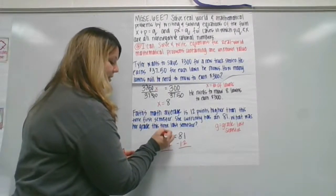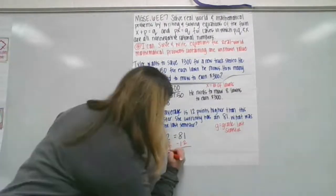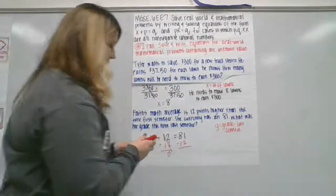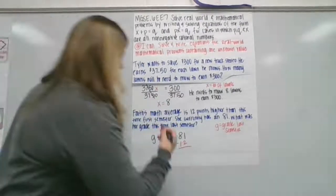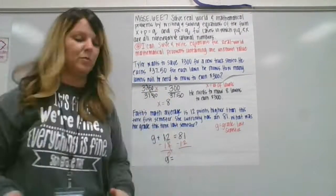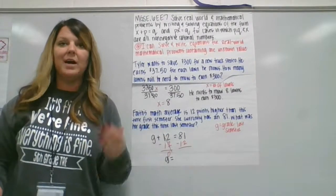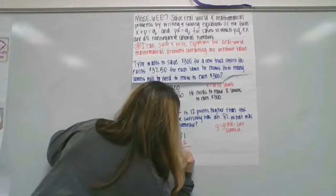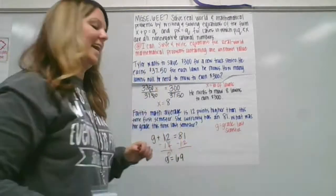All right. So I'm going to cross these out because they're gone. Plus 12 minus 12 is zero. That just leaves us with G equals 81 minus 12. Well, 81 minus 10 is 71, 71 minus 2 is 69. I would say, as her mother, 81 is much better than 69.